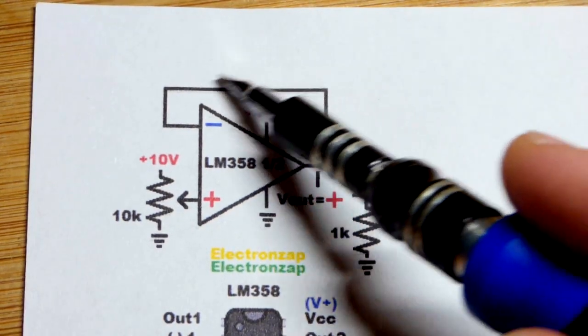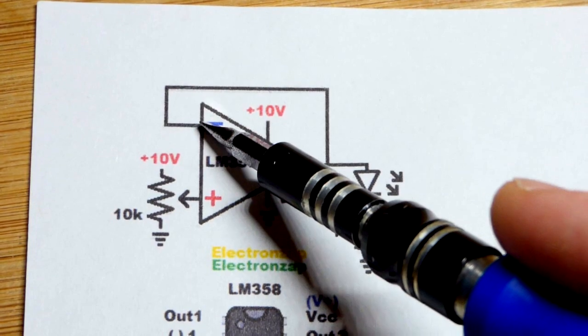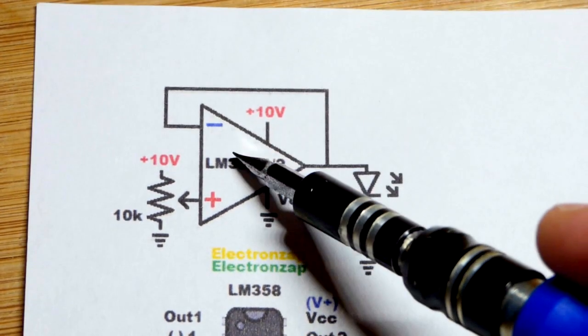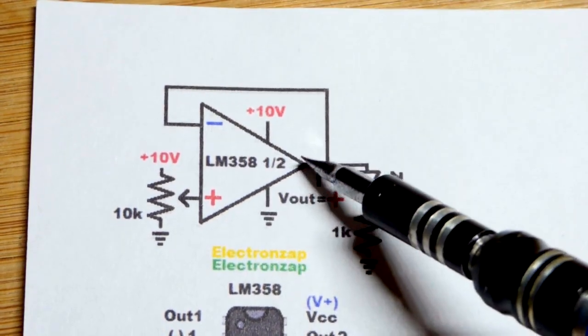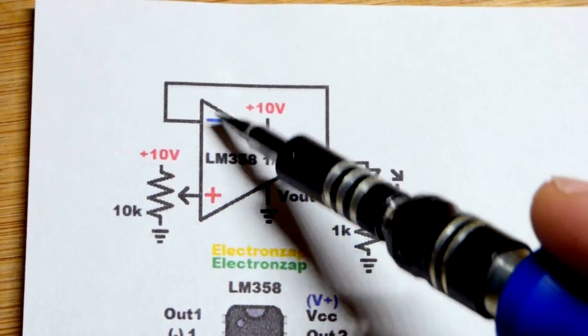And that is because of the negative feedback right there going to the inverting input. So what the op amp does, it changes its voltage at the output based on the difference in voltage at these two inputs.